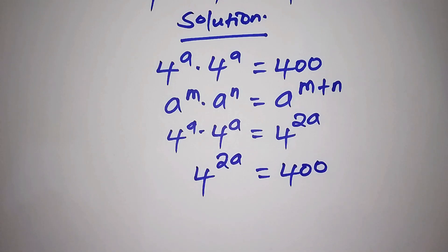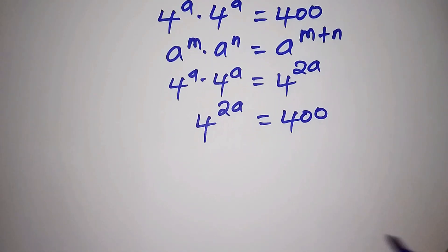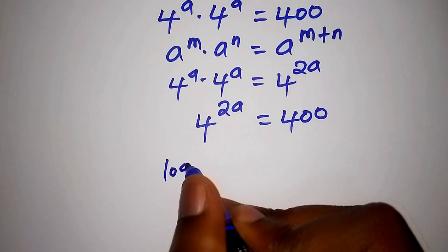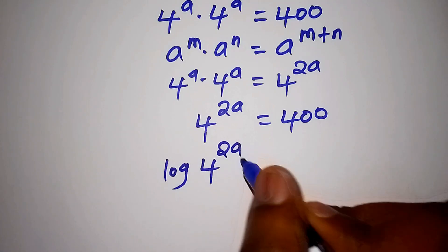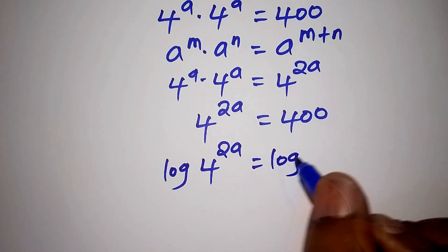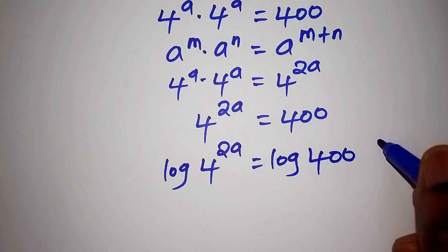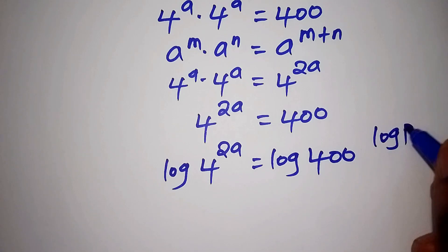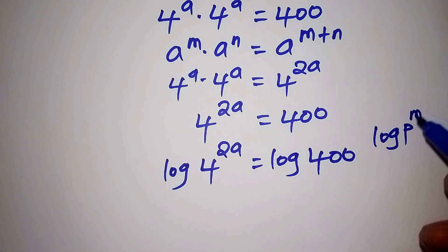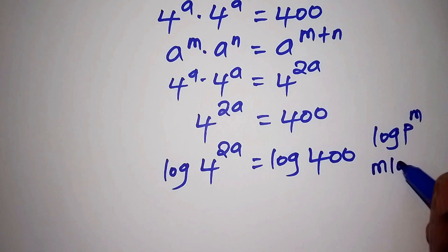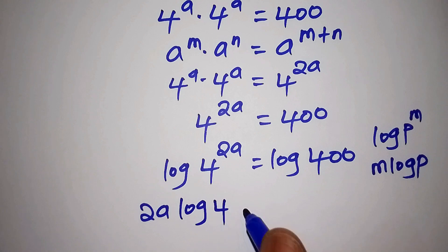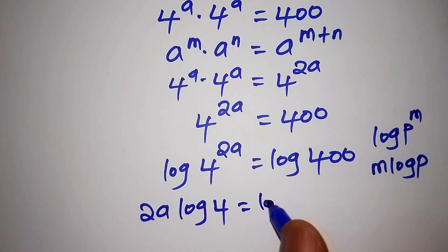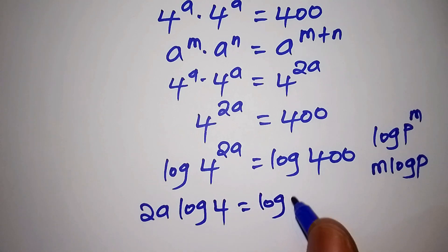The next step is to introduce the log from both sides. So we shall now have the log of 4 to the power of 2A is equals to the log of 400. Assuming that we have the log of P to the power of M, this can be written as M times the log of P. So here we shall have 2A times the log of 4 is equals to the log of 400.